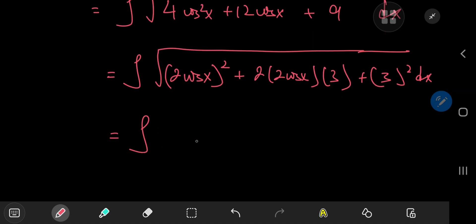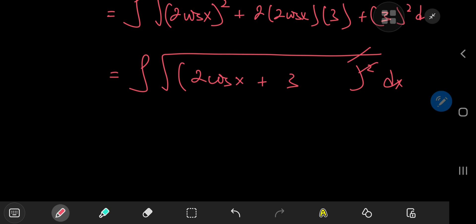So we have the integral of the square root of the square of 2 times cosine x plus 3. And the square and the square root cancel out pretty nicely, and we're left with the positive or negative integral of 3 plus 2 times the cosine of x dx.